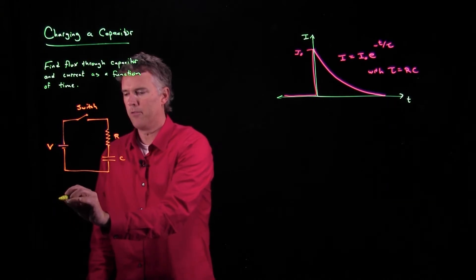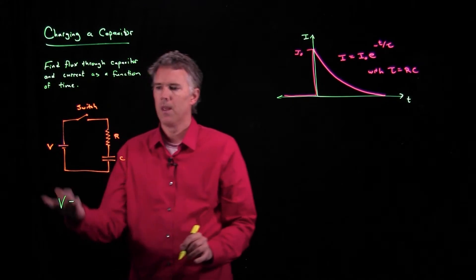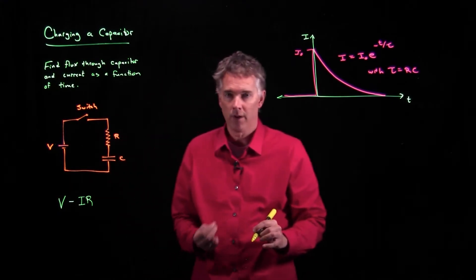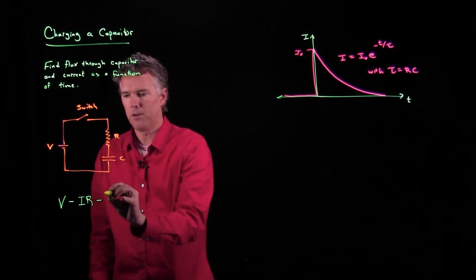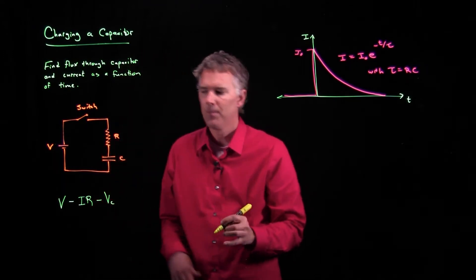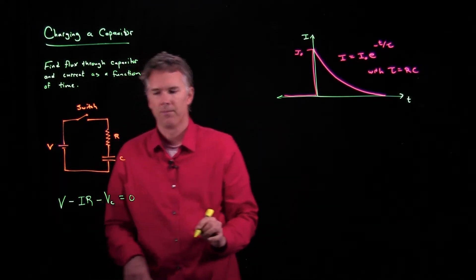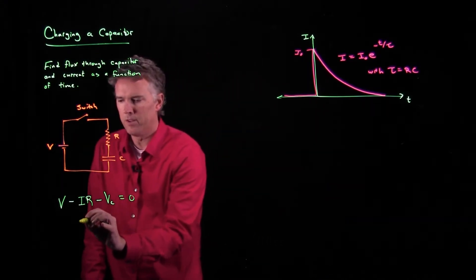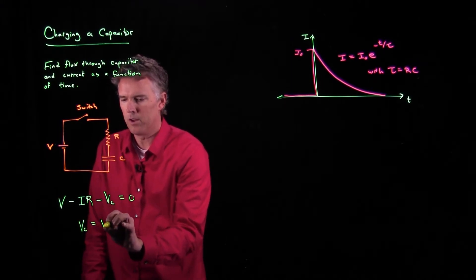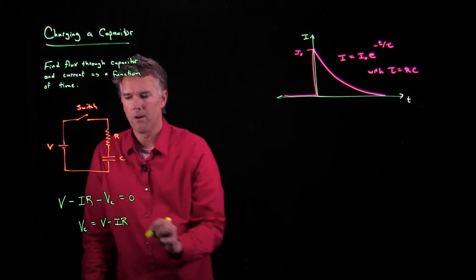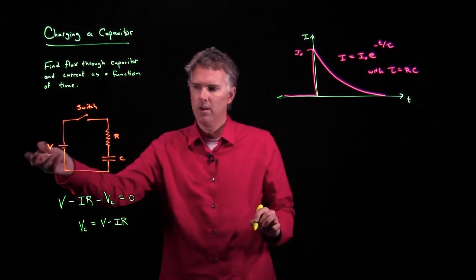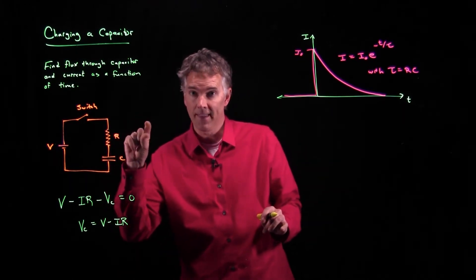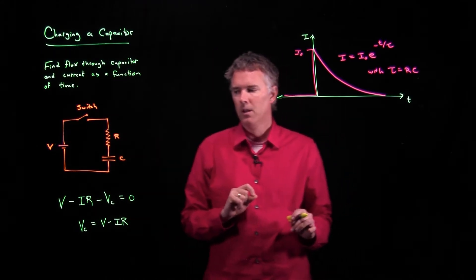So let's see what we do. If we start at V, we have potential V. When I go through the resistor, I have a drop of IR. When I go through the capacitor, I have a drop of VC, and then I'm back to zero. I'm back to exactly where I started. So let's just take this equation now and solve it for VC. VC is therefore just V minus IR. It's whatever voltage you have here minus the current through the resistor. That's what's left over to charge up the capacitor, or I should say that's the voltage across the capacitor.